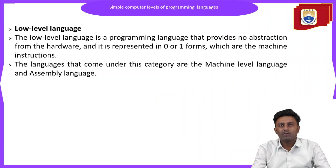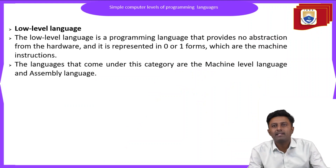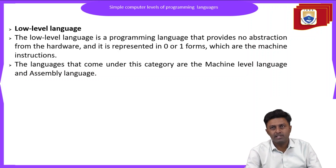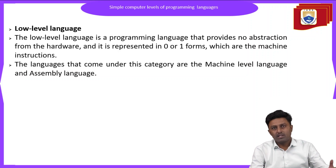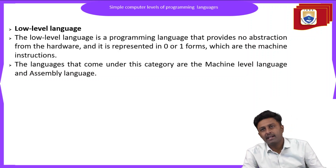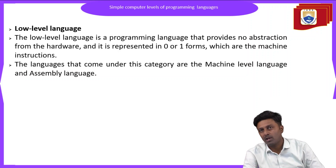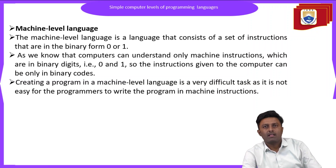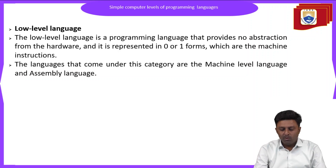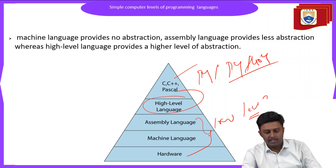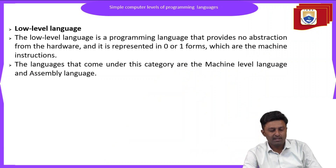A low level language is a programming language that provides no abstraction from the hardware and represents instructions in zeros and ones form, which are machine instructions. The languages that come under this category are machine level language and assembly language. In the low level language, the program will be written in terms of zeros and ones. There are two types of low level languages: assembly language and machine language.